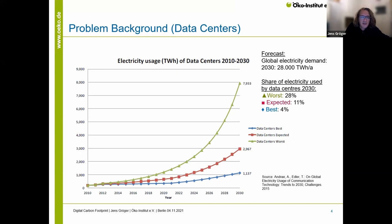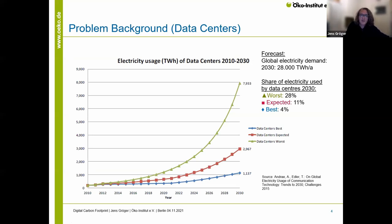This slide shows a prediction of how the energy use of data centers will rise from 2010 to 2030. There are three different scenarios: the expected case ends up at 3,000 terawatt hours of electricity; the worst case is about 8,000 terawatt hours; and the best case about 1,000 terawatt hours. Comparing these to worldwide electricity consumption, in the worst case that would be 28% of all worldwide electricity consumed by data centers alone. In the expected case it's 11%, which is still quite a huge number, especially since everyone wants electricity for steel production and electric cars.